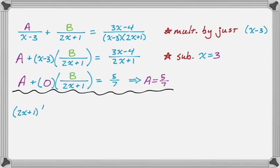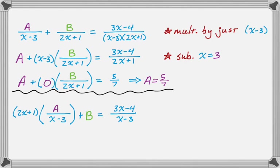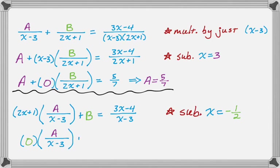The clever choice here is x equals negative 1/2, since that zeros out 2x plus 1. Substituting x equals negative 1/2 zeros that term out, and the remaining expression simplifies to B equals 11/7. These are exactly the values we got for A and B before, just via a slightly different approach — and that leads us to what's called the cover-up method.